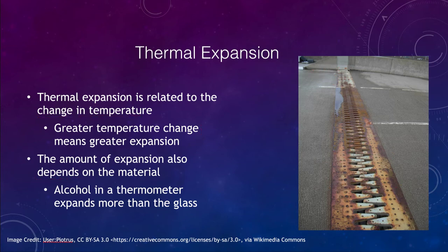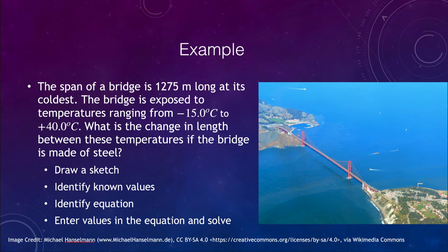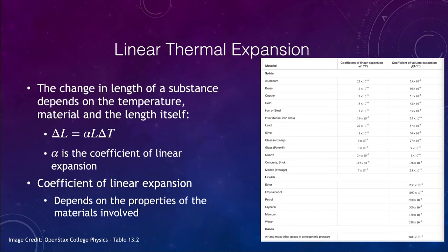Let's look at a calculation example. Consider a bridge with a span of 1275 meters exposed to temperature changes ranging from −15°C to +40°C. We want to find the change in length if the bridge is made of steel. Referring to the table from Chapter 13 of the textbook, the coefficient of linear expansion for steel is 12 × 10⁻⁶.